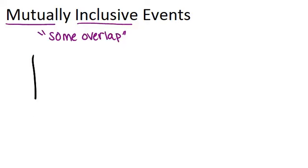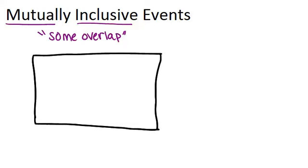For example, if we thought about the sample space of all the numbers that you could get when you roll a die, and in particular, we thought about two different events. One of those events is rolling an odd number. Remember, our odd numbers would be 1, 3, and 5 for a die.